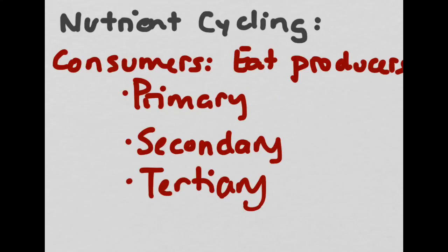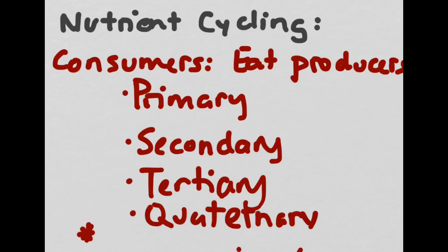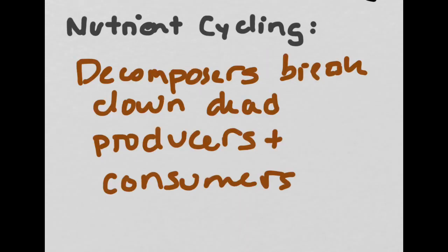Consumers eat producers. They are primary, secondary, and tertiary consumers. Occasionally you'll also have quaternary consumers, but not very often for reasons that we'll see in a bit. Decomposers break down dead producers and dead consumers.